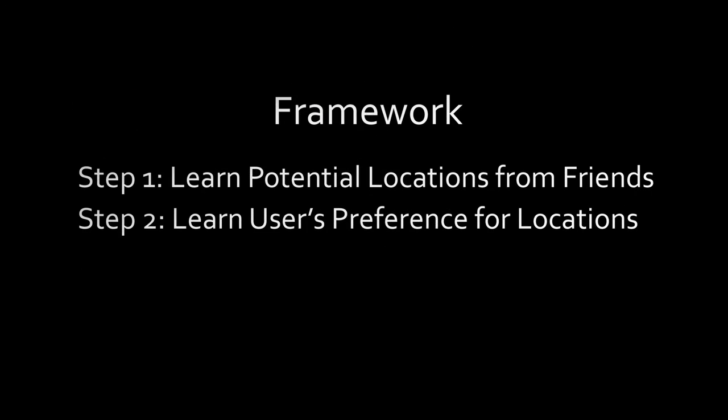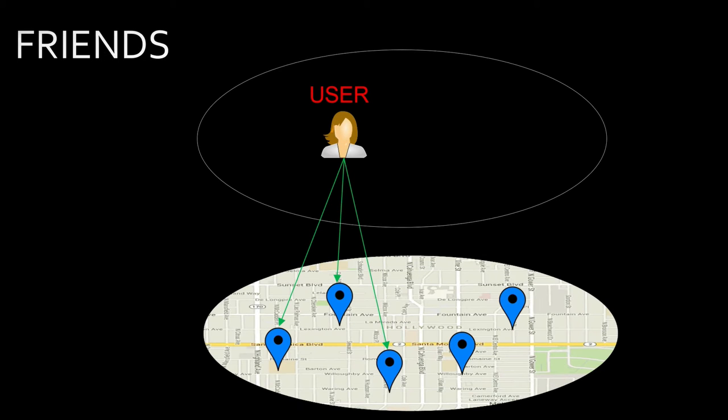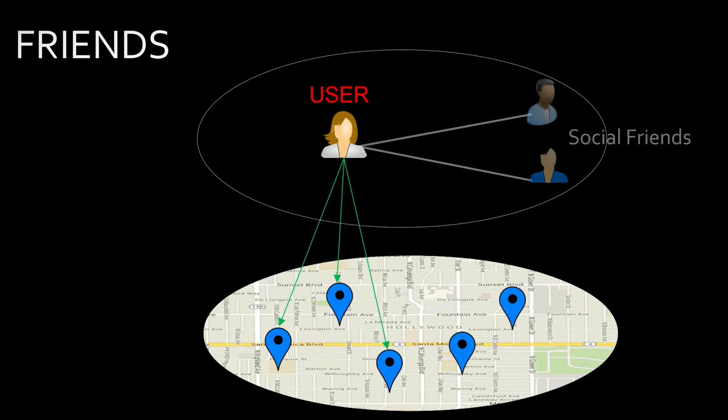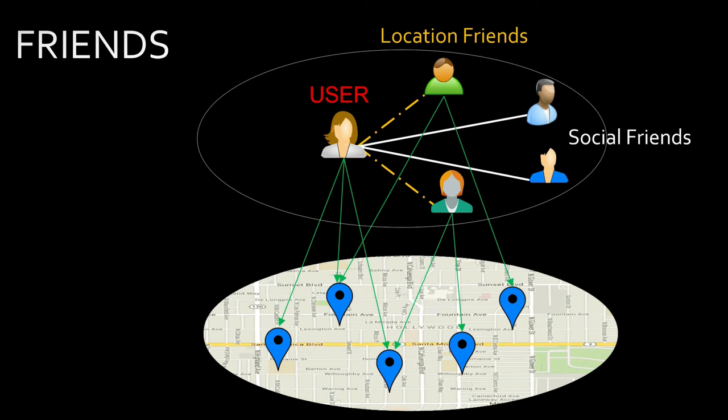In this work, we propose a two-step framework. In the first step, we learn users' potential locations from three types of friends: social friends, location friends, and neighboring friends.